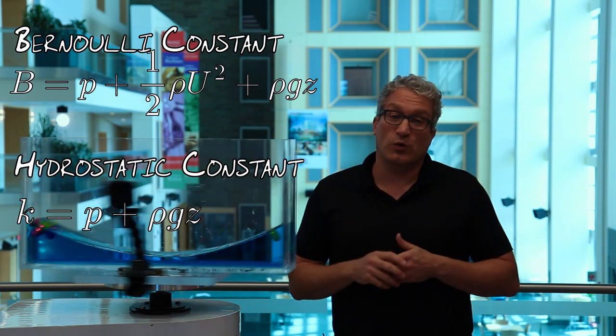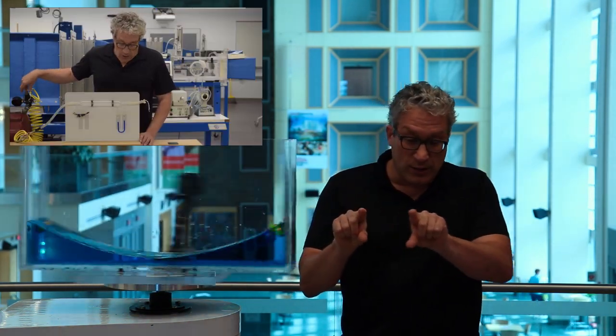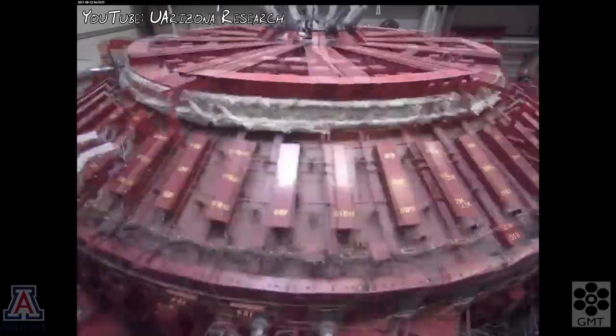If we know the streamlines — the path the fluid takes — we know what's happening to the Bernoulli constant and the hydrostatic constant, and therefore the pressure distribution. This helps us understand how the shape of an airfoil leads to curvature of streamlines and therefore lift, how a venturi's throat generates a pressure change used to mix fuel and air or measure flow rate, and why rotating fluid in a circle makes a parabolic shape — useful for manufacturing large parabolic objects like the lenses for the Giant Magellan Telescope.